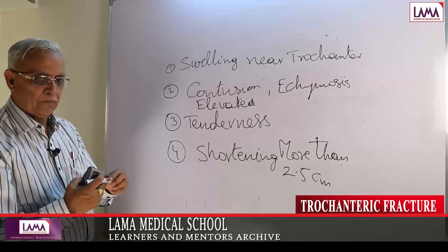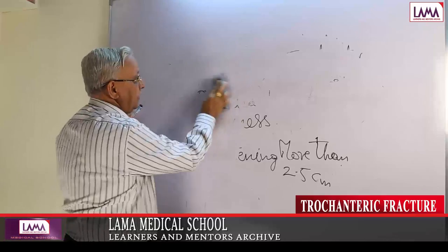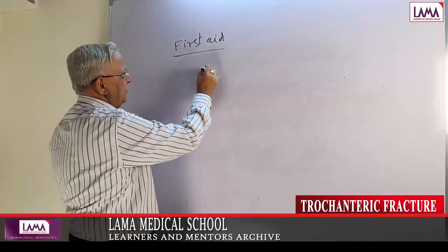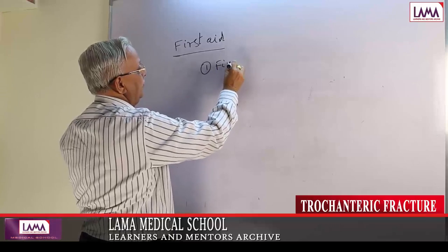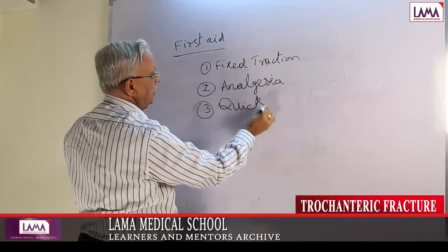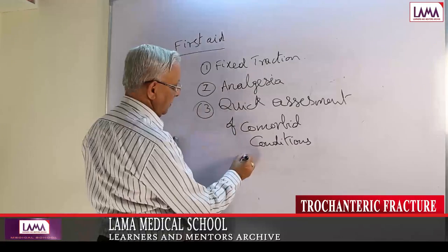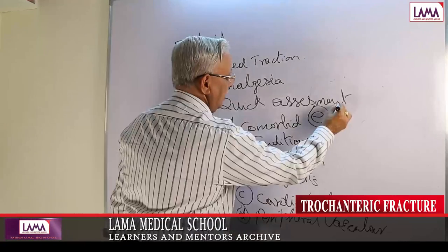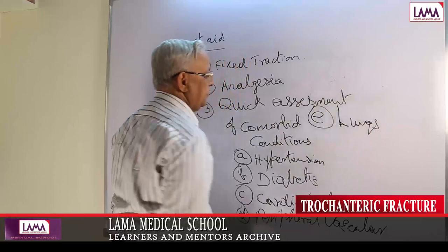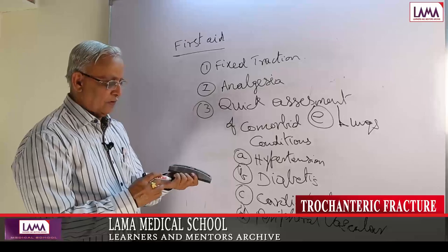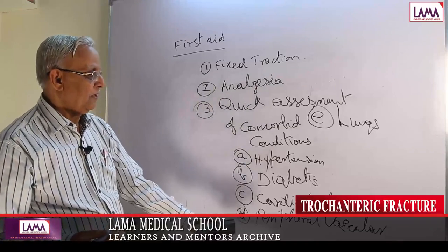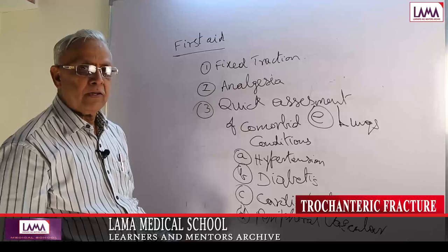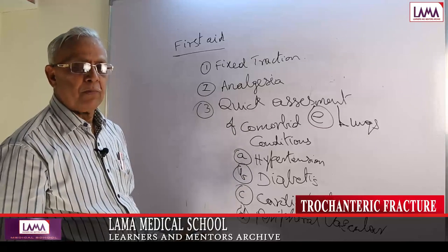Management consists of initial first aid, diagnosis, and planning of treatment. First aid: give fixed skin traction so there is not much movement, plus analgesia. Quick assessment of comorbid conditions — hypertension, diabetes, cardiovascular disease, cerebrovascular disease, pulmonary diseases. These are the basic things to quickly assess before taking the patient further, because depending on comorbidities we plan analgesia and cannot give certain drugs. This is especially important in patients beyond 50 to 60 years of age.